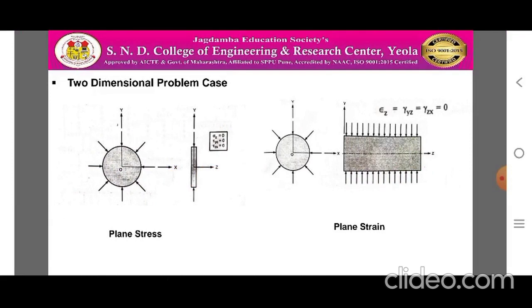In the case of two-dimensional problem case, the elements or bodies are represented by two dimensions. There are two cases of two-dimensional problems: one is plane stress condition and another is plane strain condition. In plane stress, the third dimension is considered negligible compared to the two dimensions. Examples of such bodies are membranes, thin plates, etc. In plane strain, the third dimension is assumed large compared to the other two dimensions. Examples of plane strain problems are shafts, axles, etc.